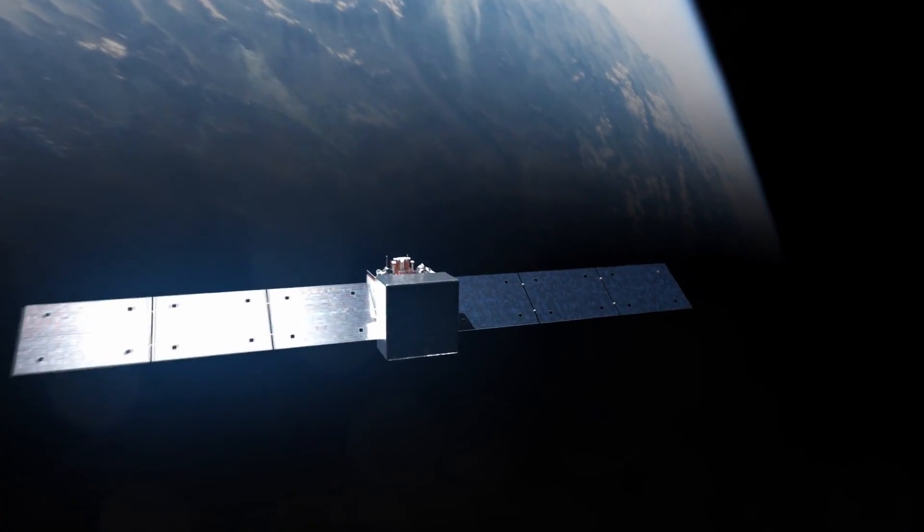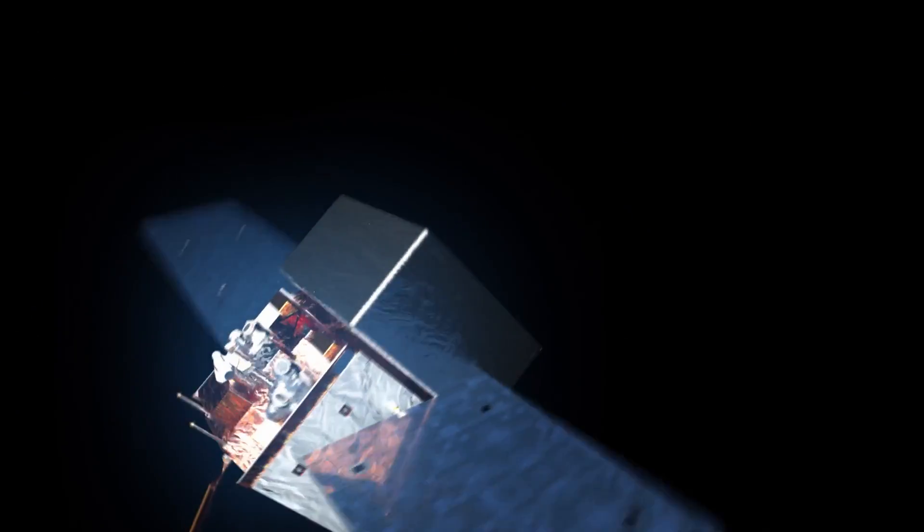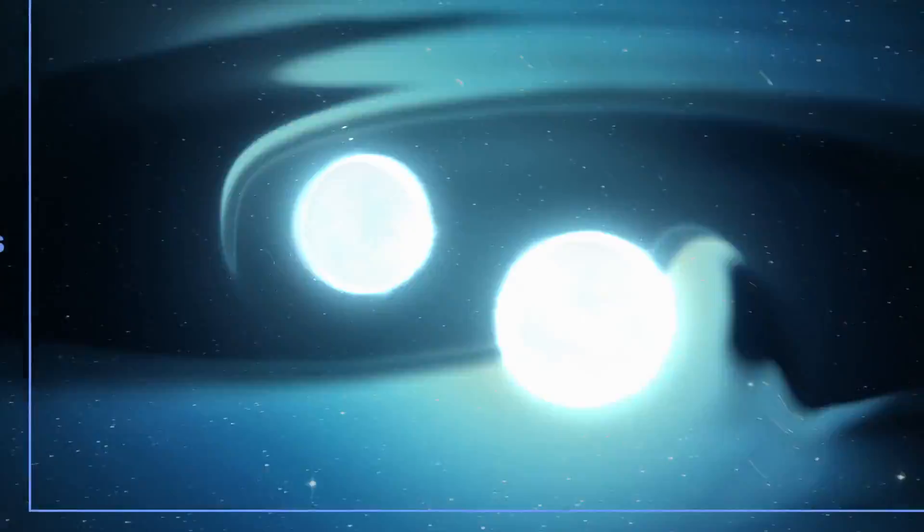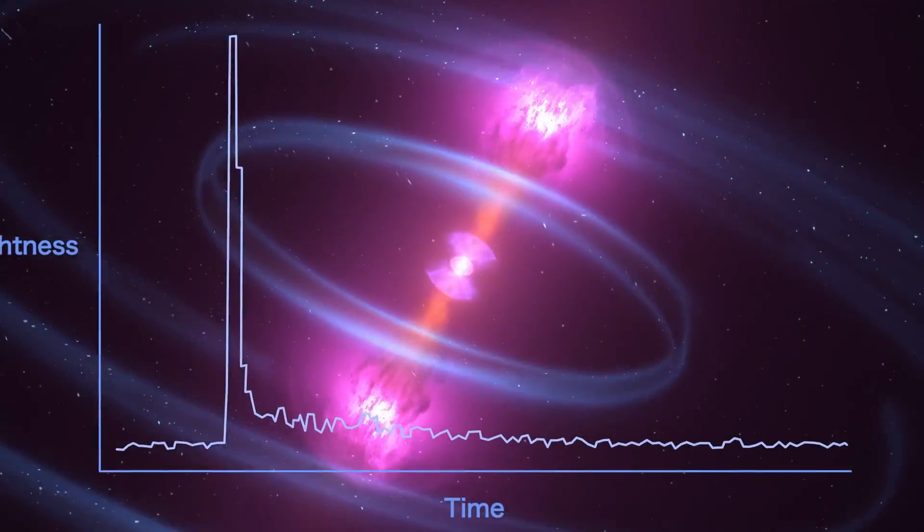NASA's Fermi Gamma-ray Space Telescope watches the sky for gamma rays, the highest energy form of light. These detections help scientists learn more about the most powerful events in the cosmos.